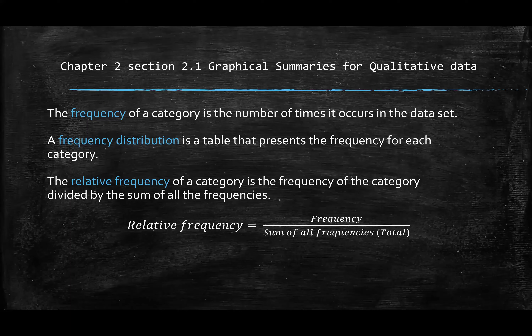Basically, you organize your data into each category and you want to know how often that data appears. Relative frequency is basically you take each of your frequency divided by the sum of all frequencies, which is the total of every data that you have. Relative frequency, as you will see later, is basically the percentage of something.